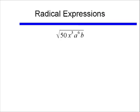Here's an example with some x's and a's and b's. If I have the expression, square root of 50 times x cubed times a to the 6 times b, I'm going to try to find as many perfect squares as I can.